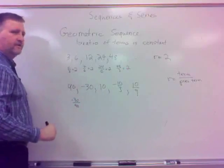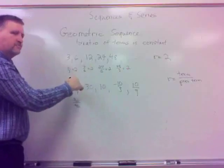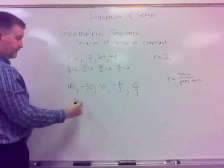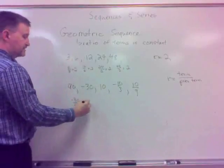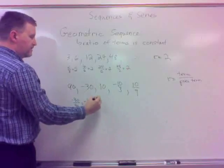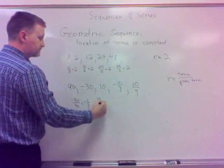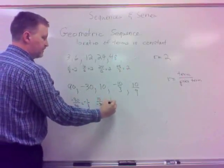You may want to go the other way around, but it's the term divided by the previous, just like we did up here. What does that give me? Simplify, that's negative one-third. 10 divided by negative 30 is also negative one-third.